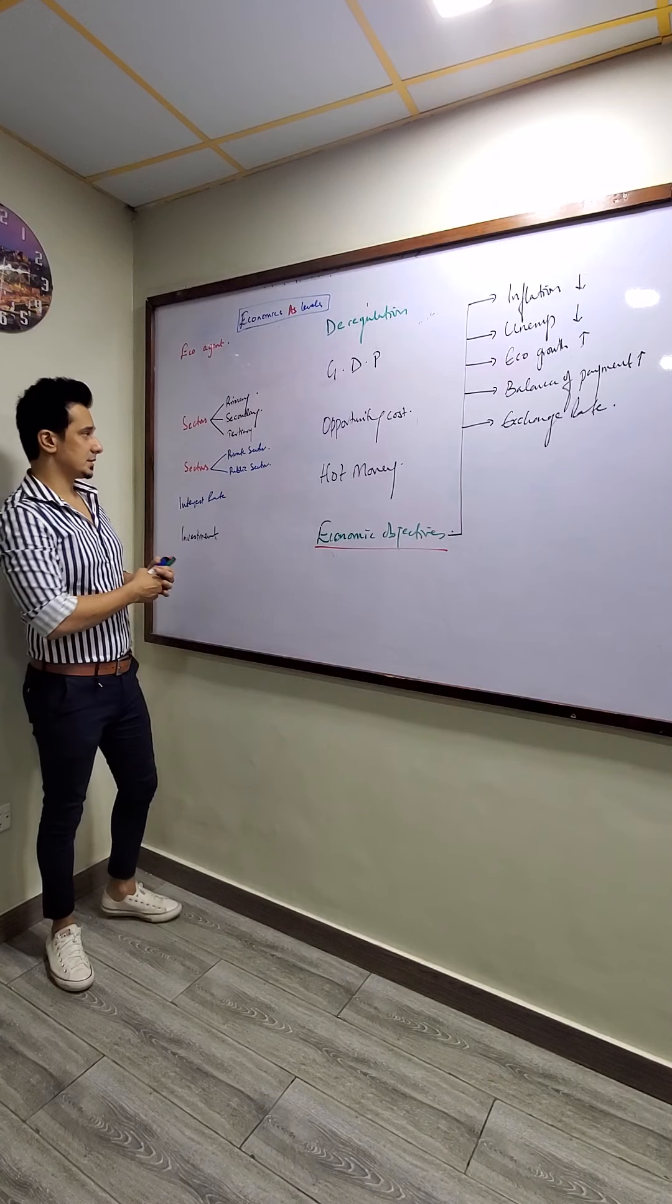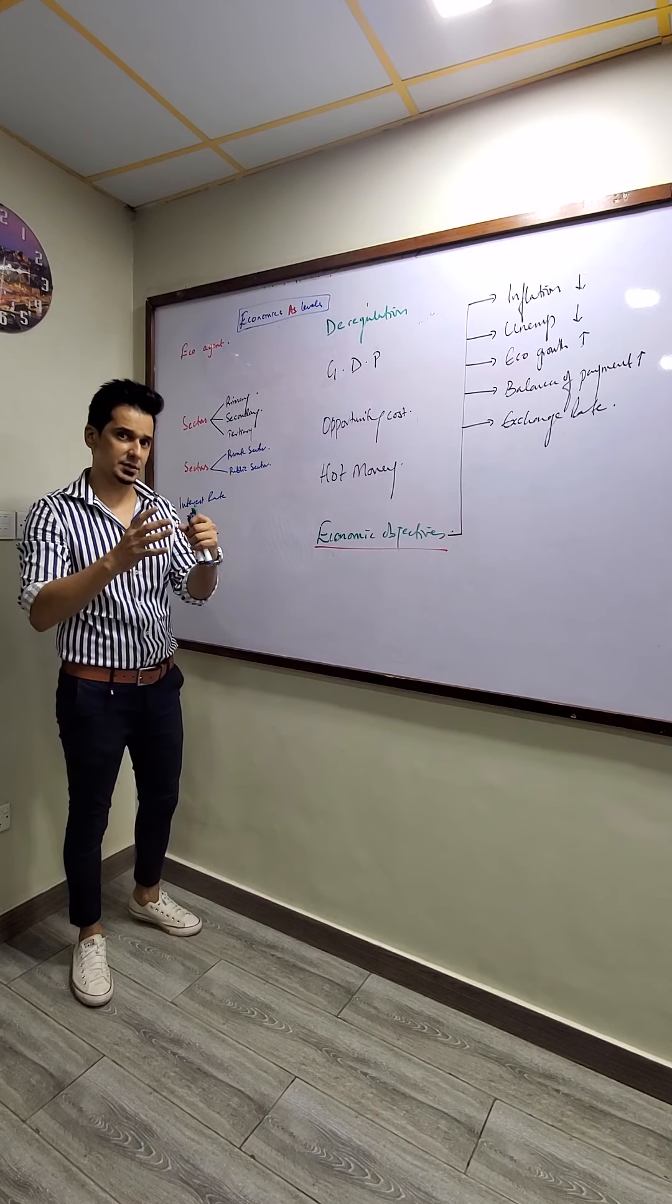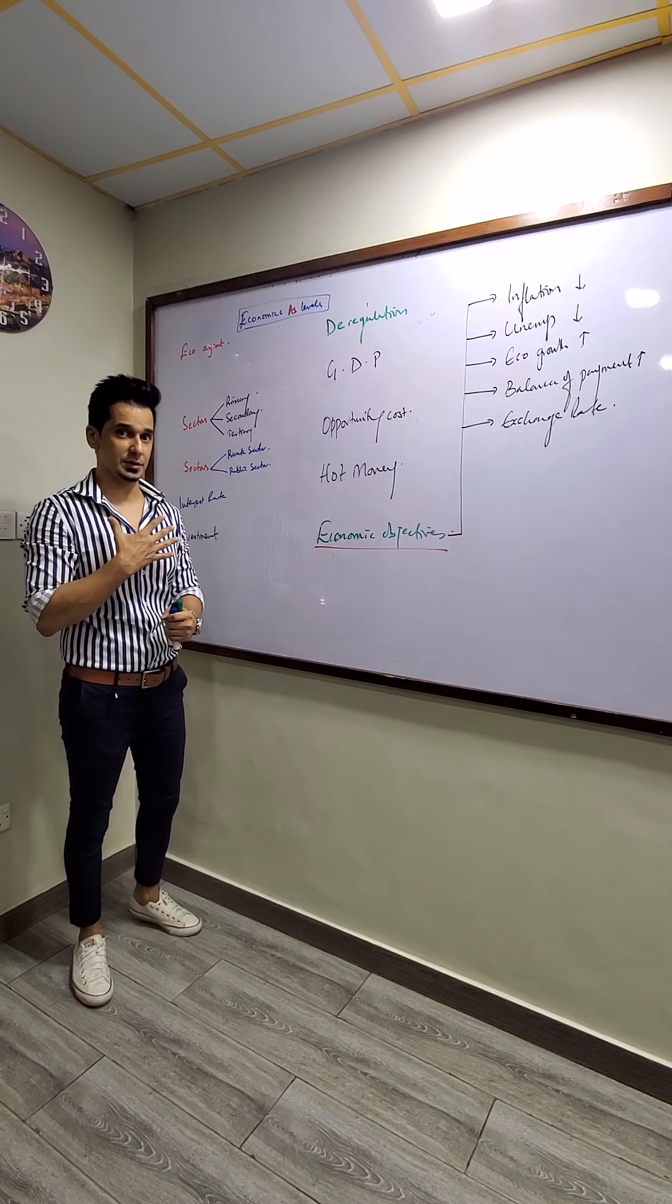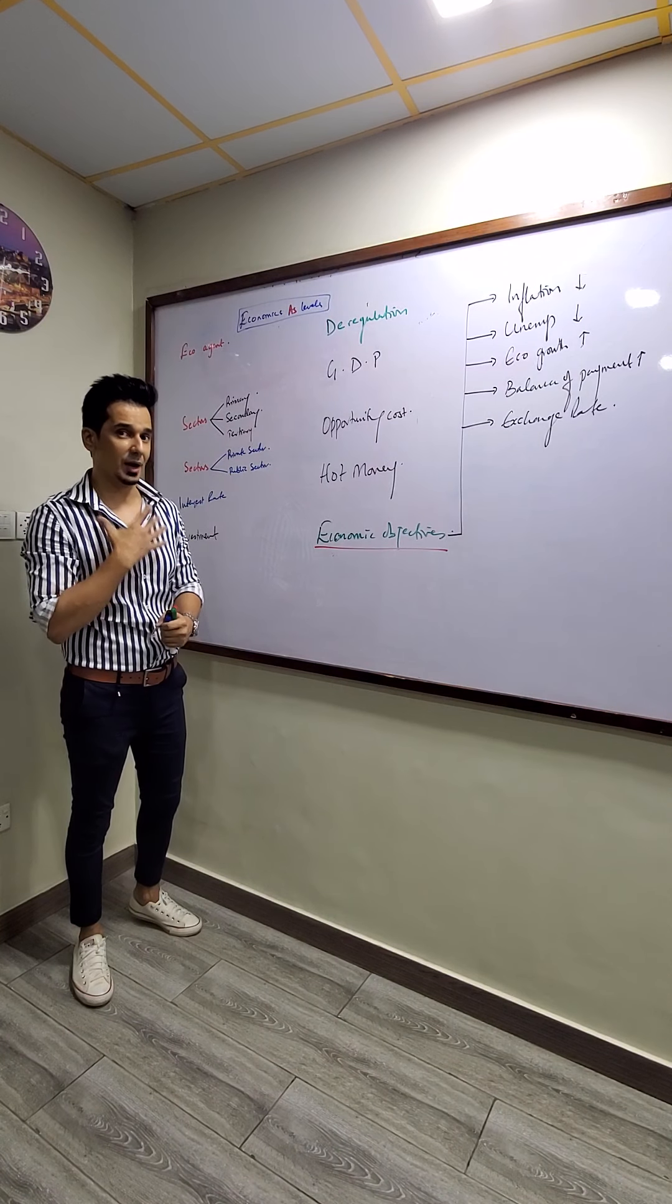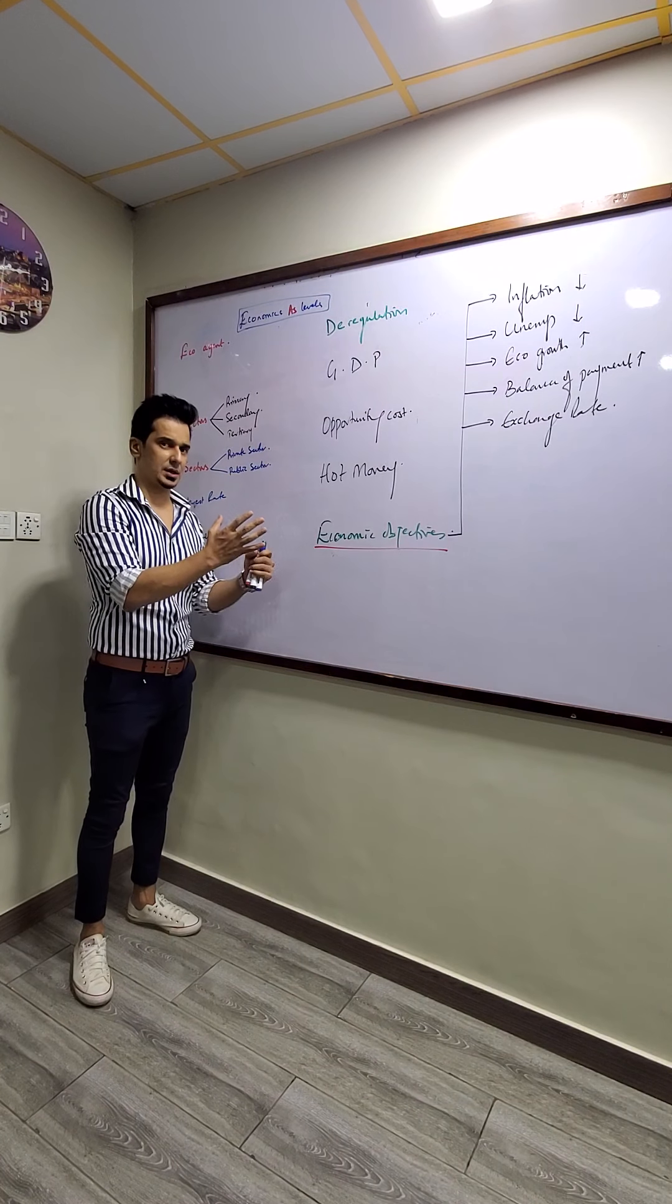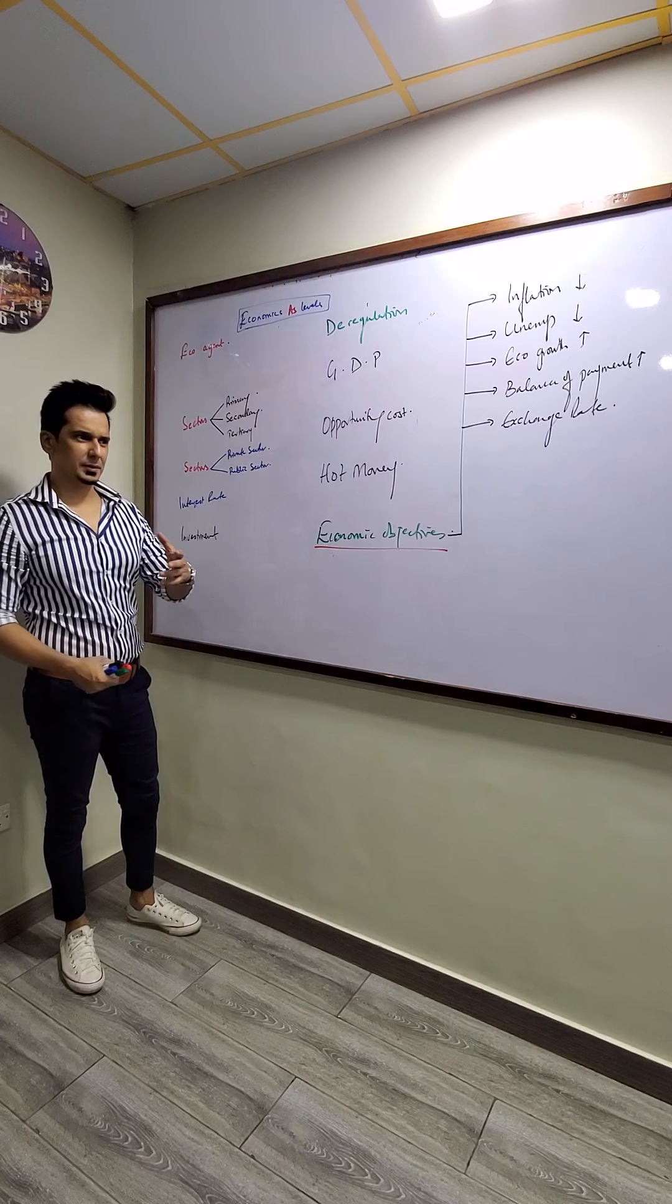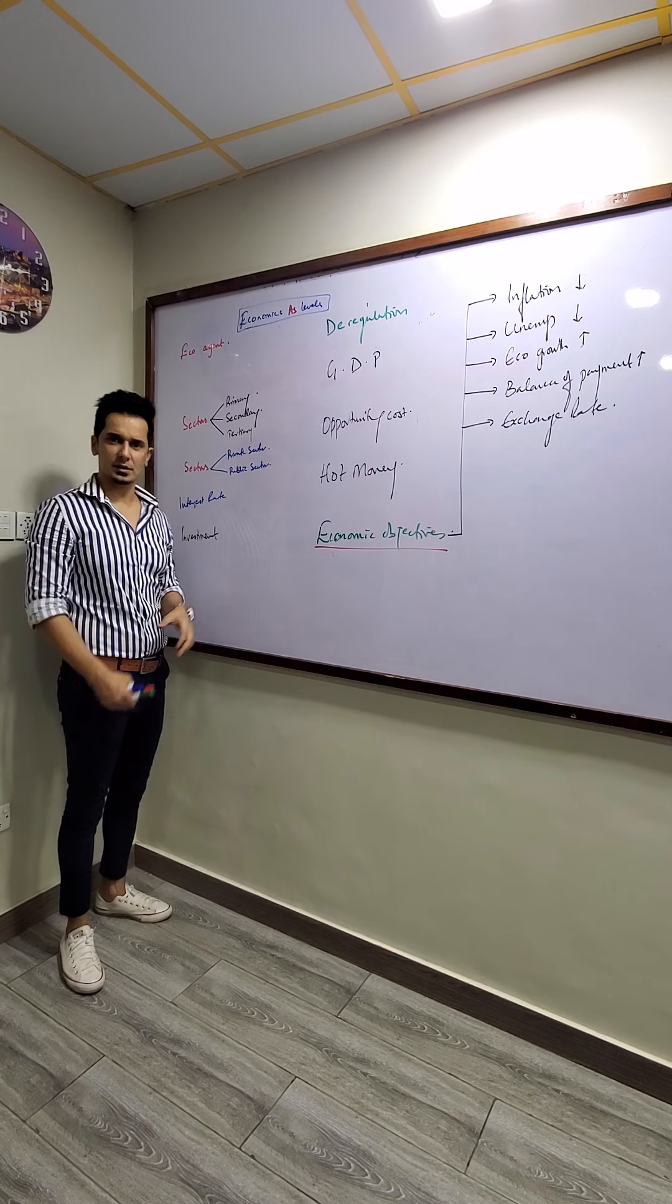Now this is another sector: there is private sector and there is public sector. Private sector is a sector which is owned by private individuals. The main objective of private sector is to make profit, and the secondary objective is to increase efficiency. Examples: Nokia, Nike, Samsung, they're in the private sector.